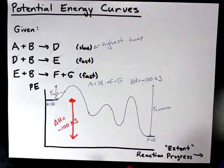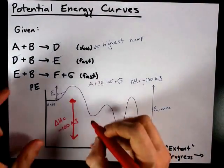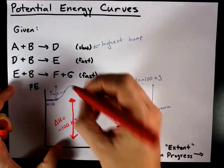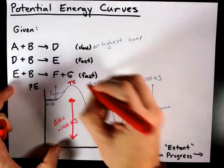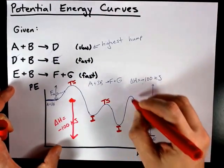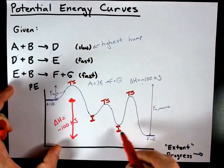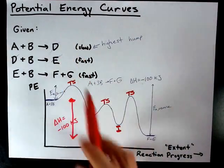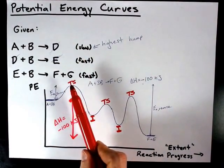And the only other things we could label here are these points, which represent the intermediates of the reaction, and these points, which represent the transition states of the reaction. Intermediates are somewhat stable, or at least locally stable, on the potential energy curve. And transition states are very unstable.